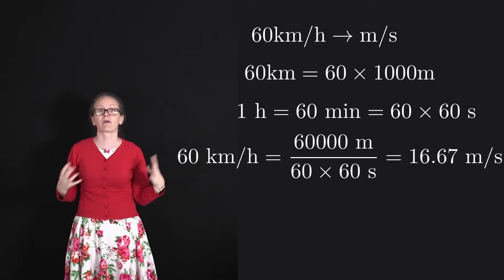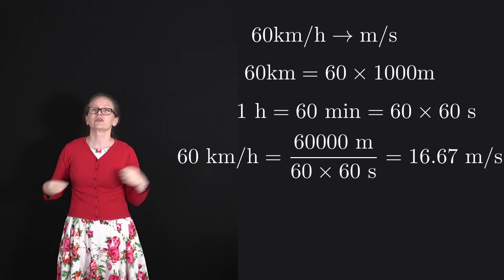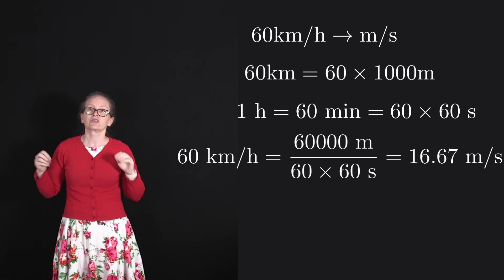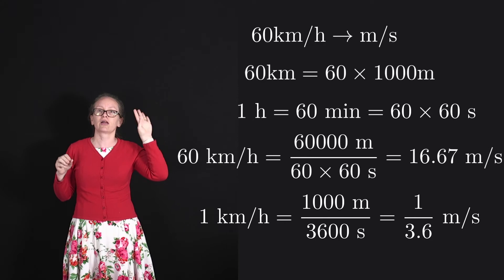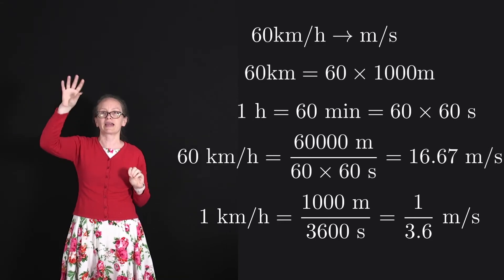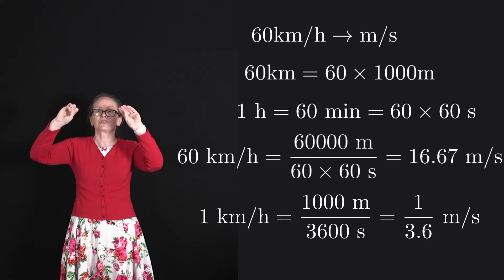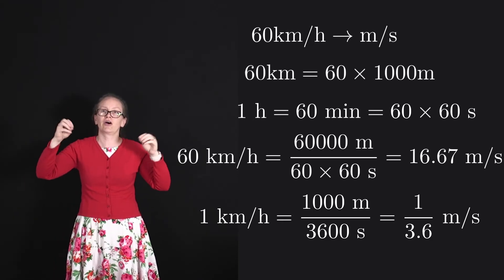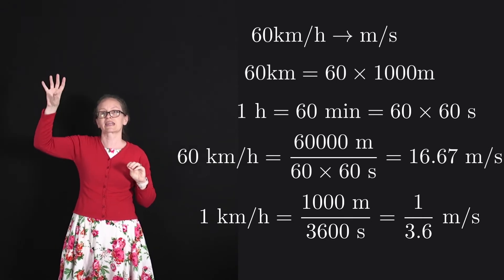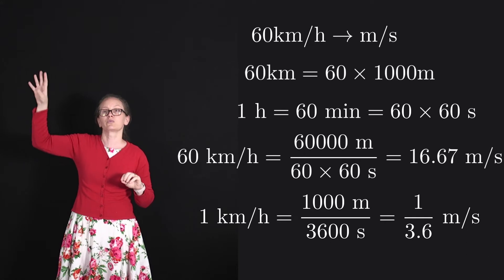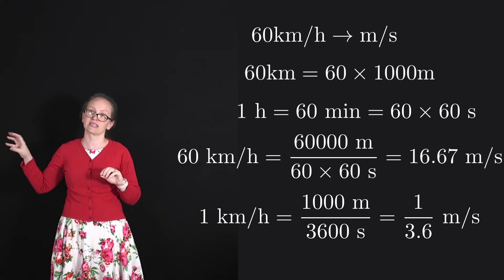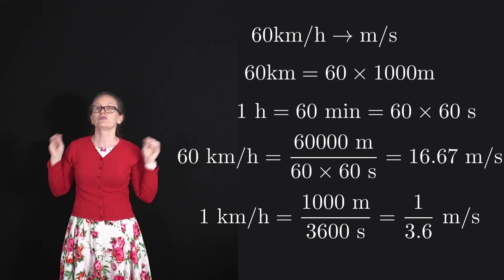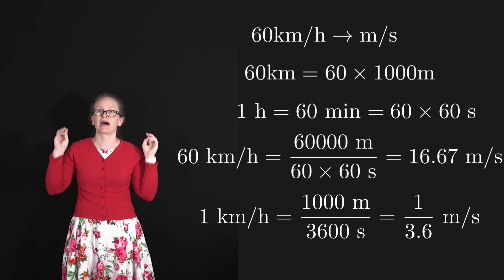This is a conversion that you'll probably need to make relatively often. So there is a little shortcut with this one, which it may be worth learning. What we've effectively done to our speed in kilometers per hour is multiply it by 1000 to convert the kilometers to meters, and then divided by 60 times 60 to convert the hours to seconds. So we're doing 1000 divided by 3600, which is 1 divided by 3.6. So if you want to convert something from kilometers per hour into meters per second, you can just divide it by 3.6.